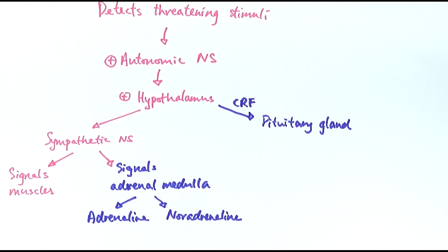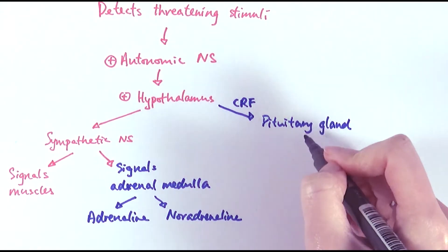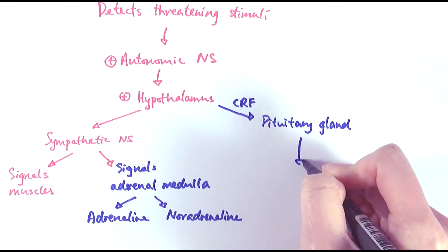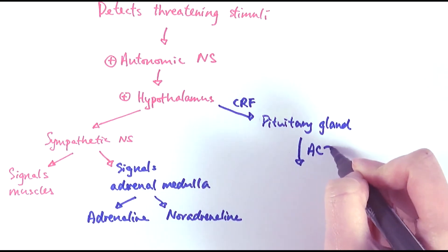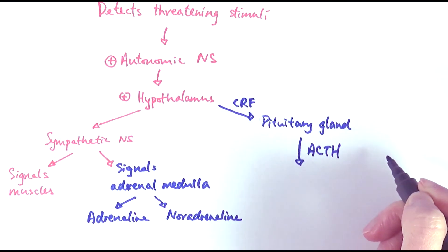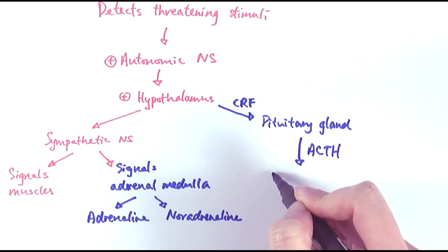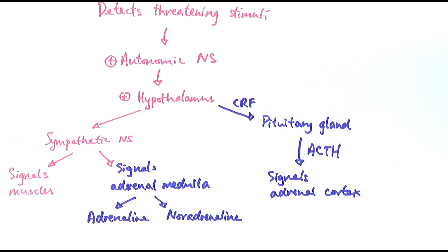The pituitary gland is a master gland, so it's able to release hormones to affect other glands as well. It will then release a second hormone called ACTH, and that ACTH specifically signals or stimulates the adrenal cortex, which is the outer part of the adrenal gland, whereas the adrenal medulla is the inner part.